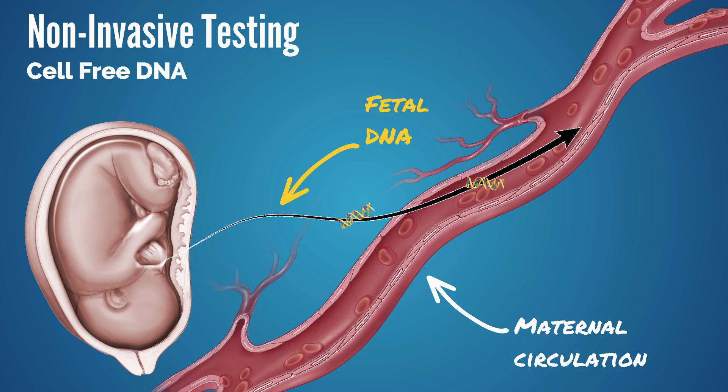Cell-free DNA evaluates short segments of DNA in maternal blood and can be used to screen for a variety of fetal conditions. The fetal component of cell-free DNA is released into the maternal circulation, primarily from placental cells undergoing apoptosis or programmed cell death. Cell-free DNA testing has a much better sensitivity and specificity and detects various forms of aneuploidy, including sex chromosomes.